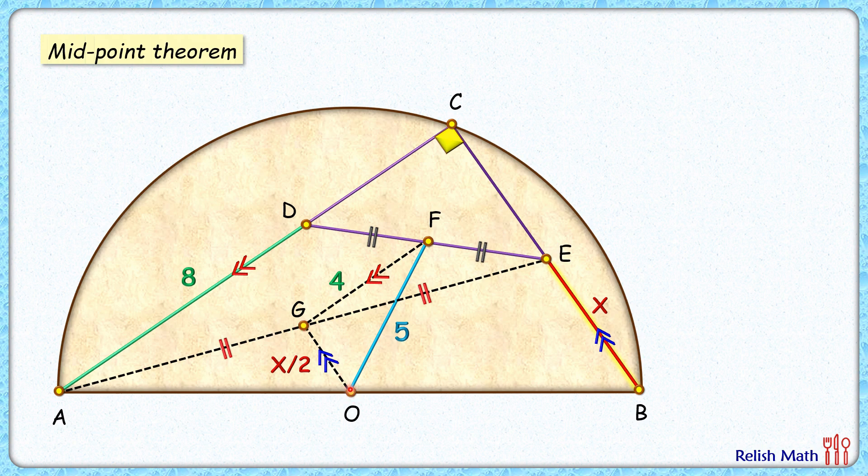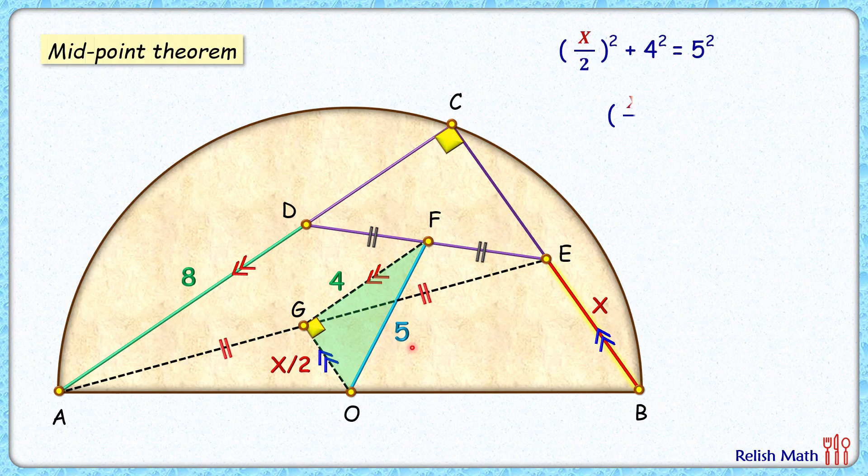So angle G will be same as angle C, that's 90 degrees. Now in this right angle triangle, applying Pythagorean theorem, we'll get (x/2)² + 4² = 5². Solving it, we'll get (x/2)² = 9, or x = 6 centimeters, and that's our answer.